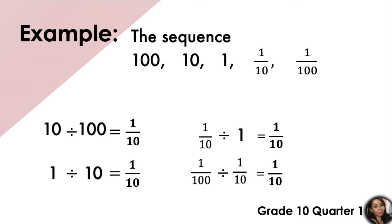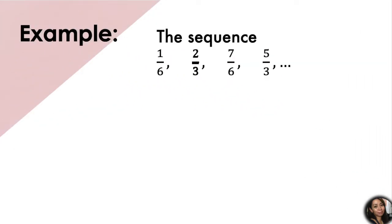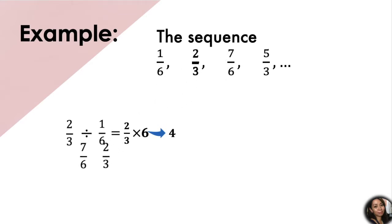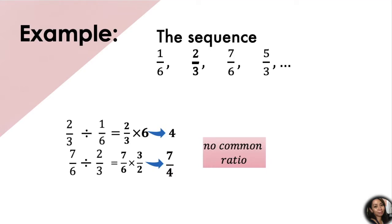For the last example, let's try the sequence 1 sixth, 2 thirds, 7 sixth, 5 thirds, and so on. Let's check if there is a common ratio. 2 thirds divided by 1 sixth is equal to 2 thirds times 6. Remember the division of fractions — we need to get the reciprocal of our divisor and proceed to multiplication. 2 thirds times 6 is equal to 4. Let's try the next two consecutive terms. 7 sixth divided by 2 thirds is equal to 7 fourths. We notice that we have different answers, so there is no common ratio. This sequence is not a geometric sequence.